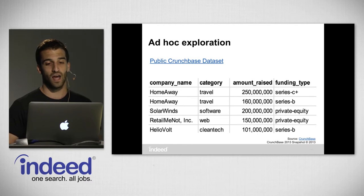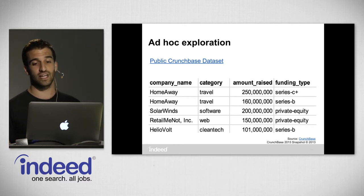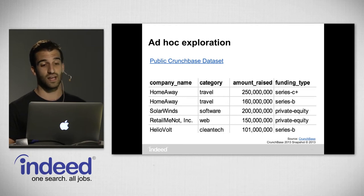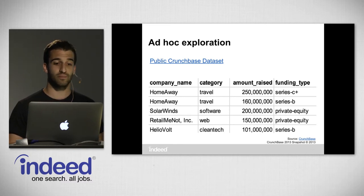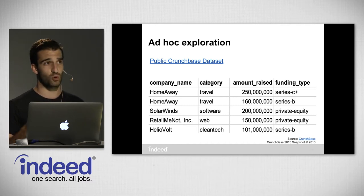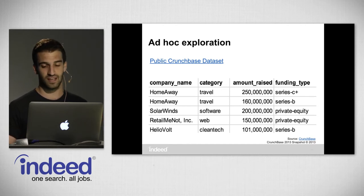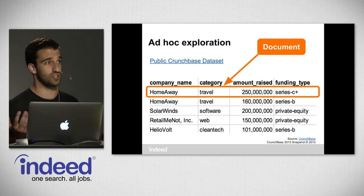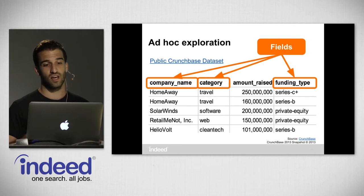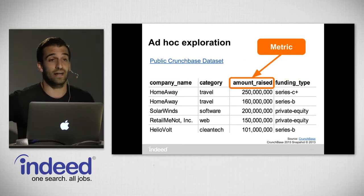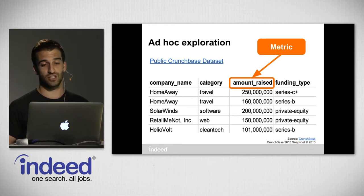Here's an example of some rows. HomeAway in the category of travel raised a series C-plus round of funding for $250 million. Again, HomeAway for $160 million had a series B stage of funding. The dataset is not just Austin — it has 48,000 investment events. I'll refer to these rows as documents, the columns as fields, and numeric-valued fields as metrics. Imhotep treats metrics specially, which is why I should call this out.